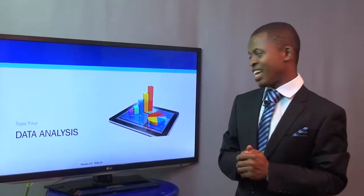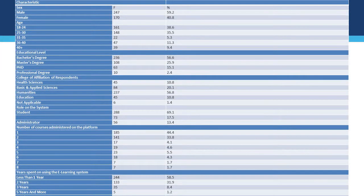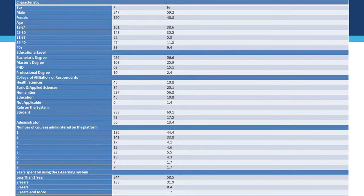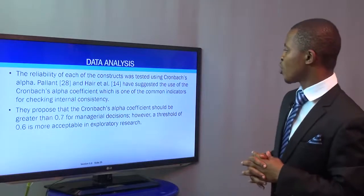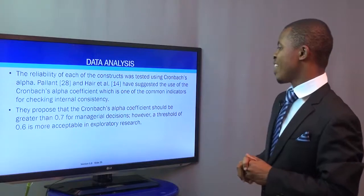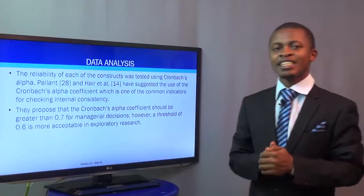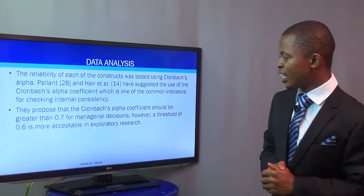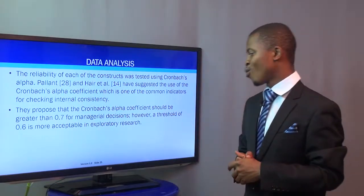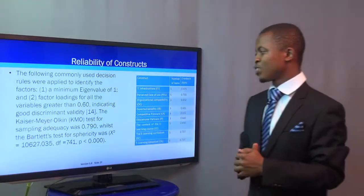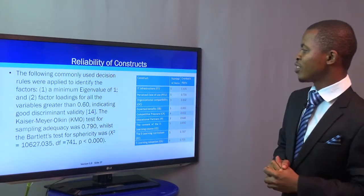For the descriptive statistics, we had 247 males and 170 females, which is a fair gender balance. The reliability of each construct was tested using Cronbach's alpha. Pallant and Herr suggested using the Cronbach's alpha coefficient, one of the common indicators for checking internal consistency. These authors proposed that Cronbach's alpha should be greater than 0.7 for managerial decisions; however, a threshold of 0.6 is more acceptable in exploratory research. Factors below 0.6 were dropped and those above 0.6 were accepted.